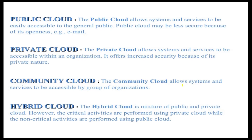Here all the definitions are shown on screen — you can pause and read them. Community cloud allows systems and services to be accessible by a group of organizations. Private cloud is for individual or organizational access with security features. Community cloud is built for a group of organizations, like all branches of JAMS sharing a community cloud.